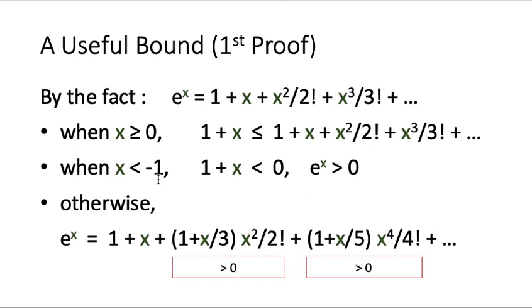When x is less than minus 1, we see that 1 plus x will be a negative value. On the other hand, e to the power of x is always greater than 0. So again, we prove that our desired bound holds.